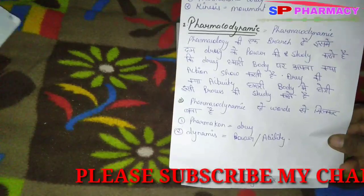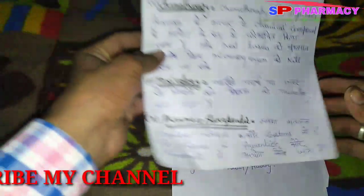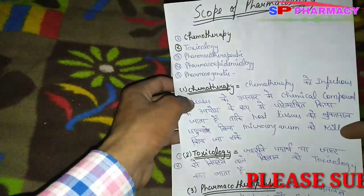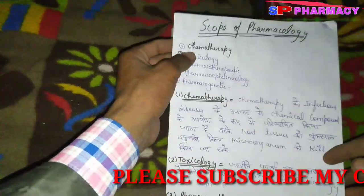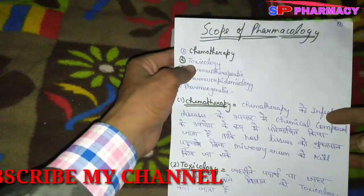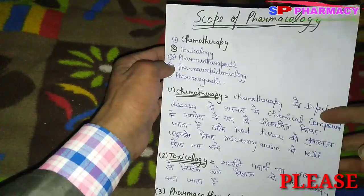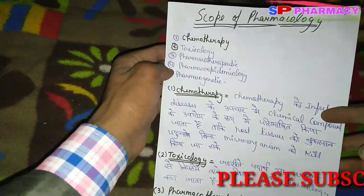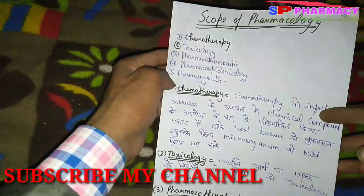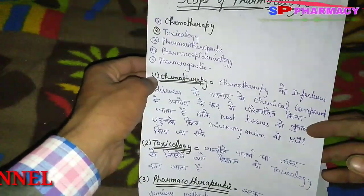Pharmacodynamics is made of two words: Pharmacon and dynamis, meaning drug power. Now we talk about the scope of pharmacology. The scope includes: number one, chemotherapy; number two, toxicology; number three, pharmacotherapy; number four, pharmacoepidemiology; number five, pharmacogenetics.